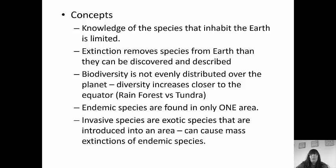Biodiversity is not evenly distributed over the planet. Diversity increases as you get closer to the equator, so you're going to have a lot more biodiversity and species in a rainforest versus in the tundra, for example. Endemic species are species that are found only in one area — they are specific to that particular area. You're not going to find them in Australia and South America; they're only going to be in one area.